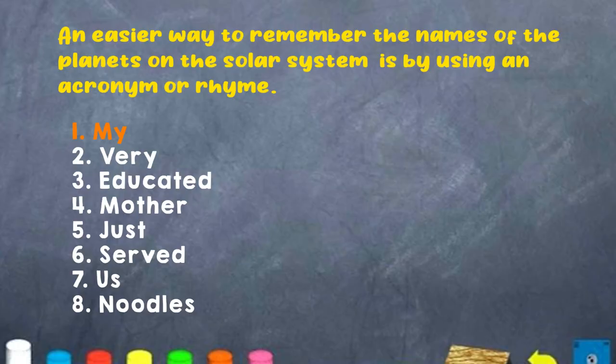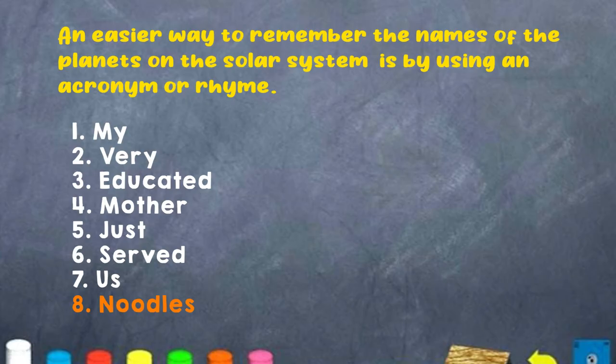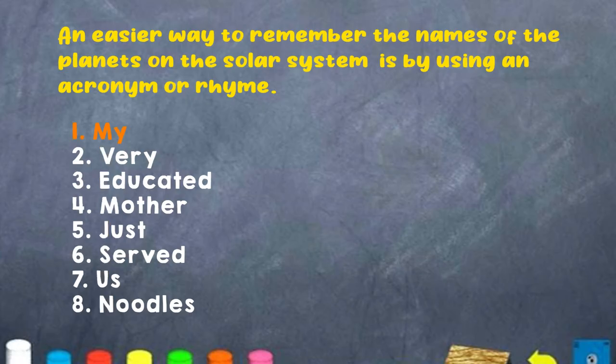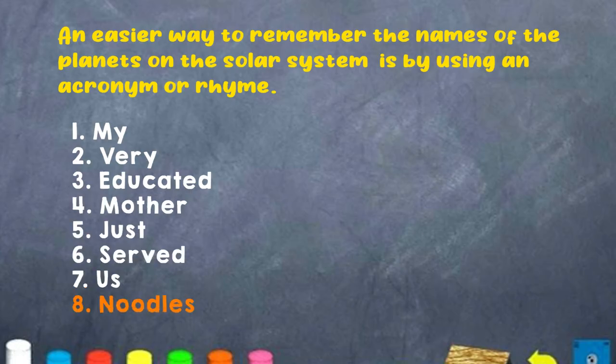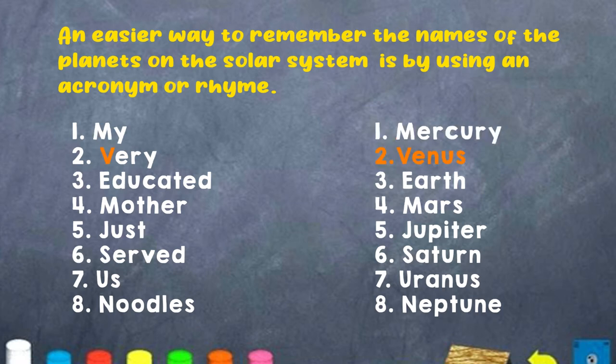An easier way to remember the planets is by using an acronym or a rhyme. I have for you two acronyms used to remember the planets found in the solar system. The first one is: "My very educated mother just served us noodles." Each first letter represents a planet — Mercury, Venus, Earth, Mars, Jupiter, Saturn, Uranus, and Neptune.